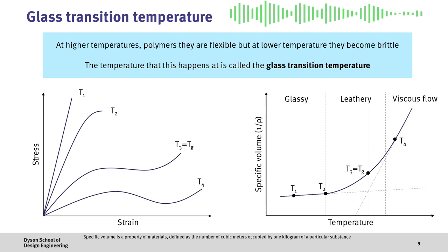Finally, as we heat up the material further, the stiffness further drops with significant increases in specific volume. This is the viscous flow region.